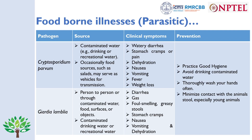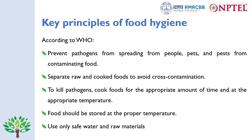The key principles of food hygiene as per WHO include: preventing pathogens from spreading from people, pets, and pests from contaminating food; separating raw and cooked foods to avoid cross-contamination; cooking food for the appropriate amount of time and at the appropriate temperature to kill pathogens; storing food at proper temperatures; and using only safe water and raw materials for preparing food.